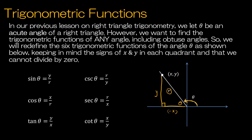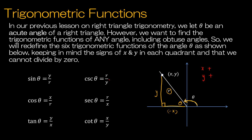Before we look at an example, I want to point out that we're going to be using positive angles, which we'll call reference angles. You need to keep in mind the values in each quadrant. In the first quadrant, x is positive and y is positive. That means sine is positive, cosine is positive, tangent is positive, and secant and cotangent are all positive. Keep in mind that r will not be 0, because the radius of our circle will not be 0.